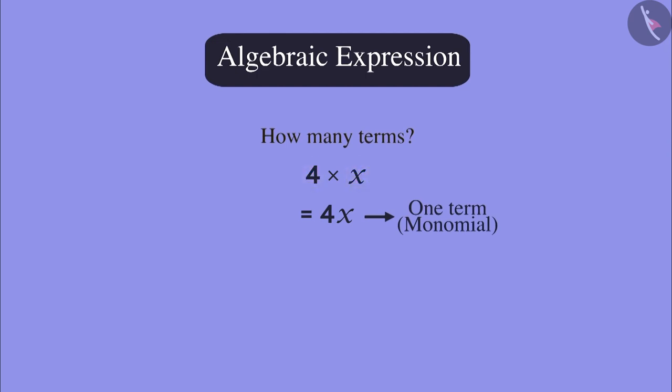We generally make the mistake on seeing two elements getting multiplied. We think that the expression has two terms. But that's not the case. This expression has only one term.